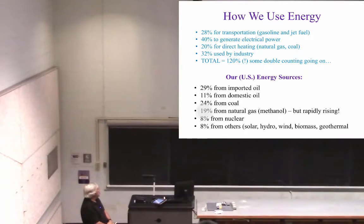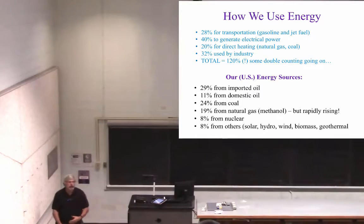24% from coal, 19% from natural gas, which is more or less methane. But this is going up for two reasons. One, fracking is cheap. It's a method of extracting natural gas. We're getting natural gas from a lot of places that we didn't get natural gas from before, because of the technology.